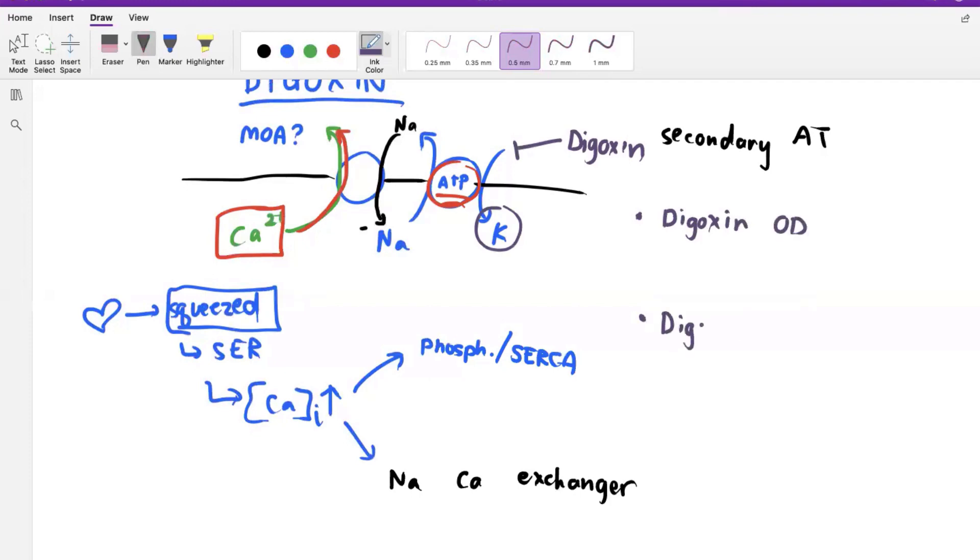And then digoxin toxicity can be predisposed - or you're going to be predisposed to digoxin toxicity with another potassium abnormality. What do you think? Digoxin overdose causes what potassium abnormality?